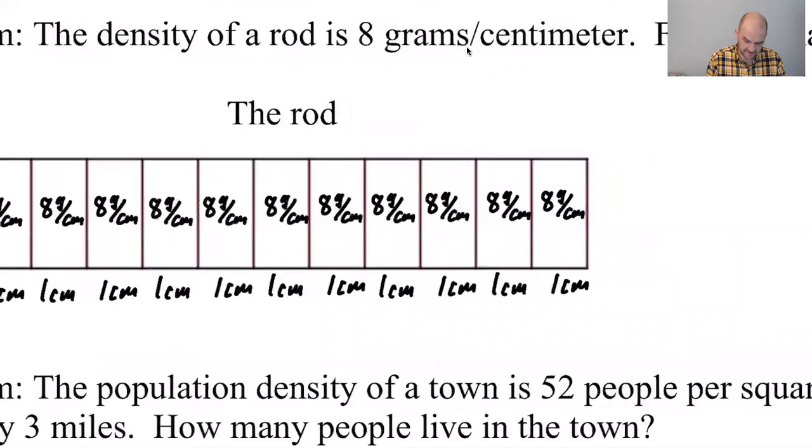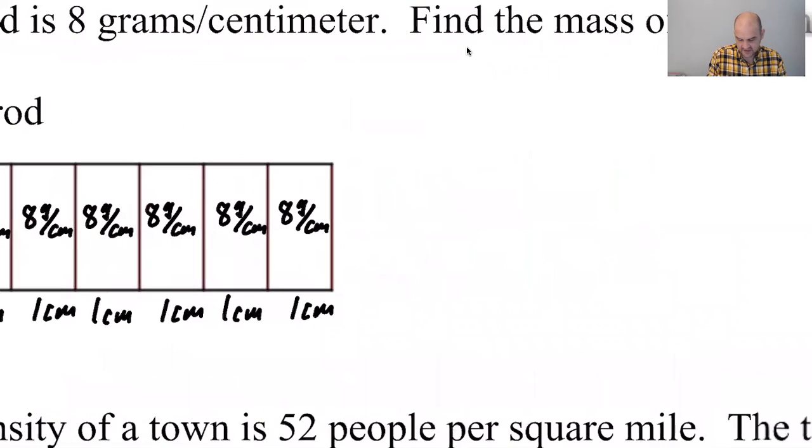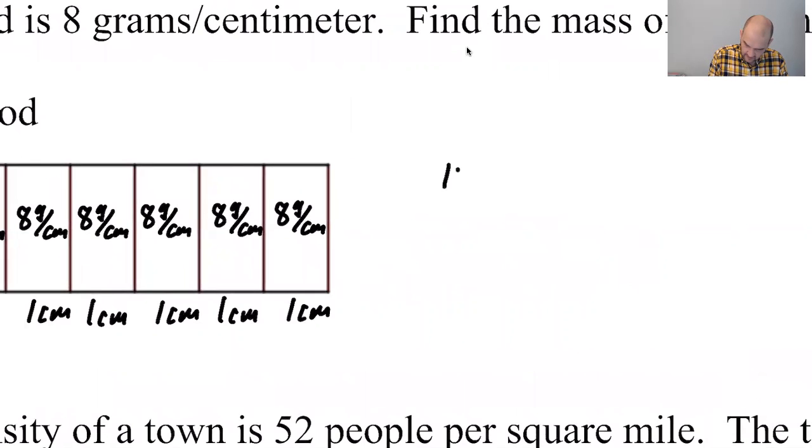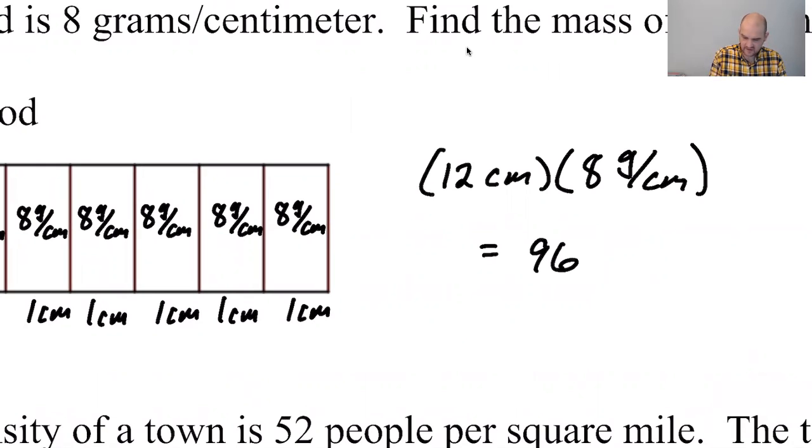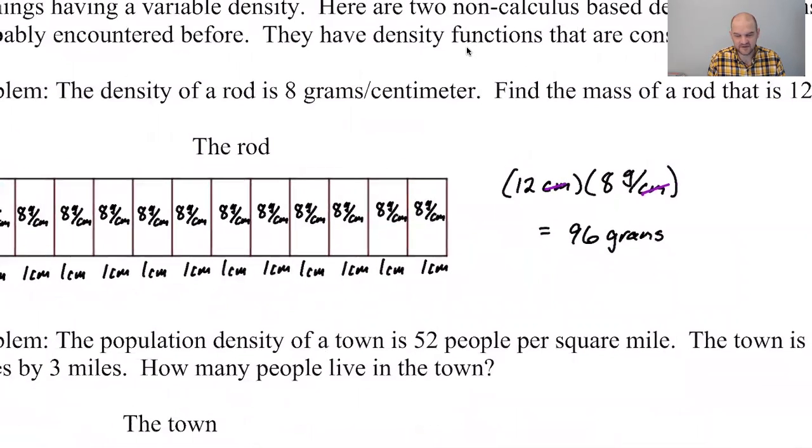So if I multiply these, each little box is eight grams basically. So I'm going to get 12 centimeters. Follow the units, times eight grams per centimeter gives me 96. Centimeters cancel. That's how dimensional analysis works or whatever you want to call it, grams. Follow the units and you will figure out what to do. I don't think anybody was going to be lost on that problem.